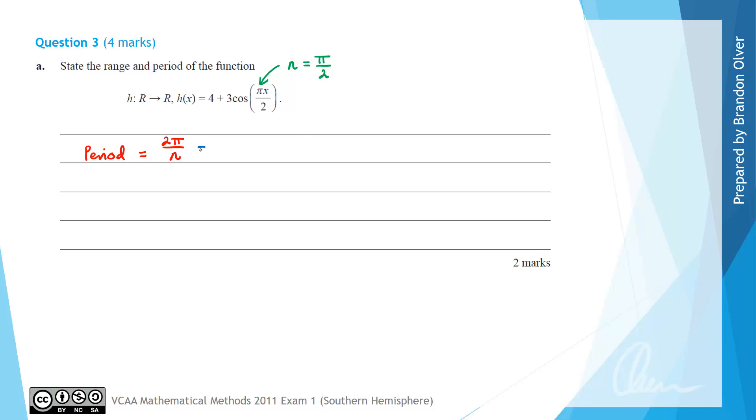So our period is equal to 2 pi divided by pi over 2, and instead of dividing by a fraction we're going to do 2 pi multiplied by the reciprocal of 2 over pi, and that is going to equal 4.